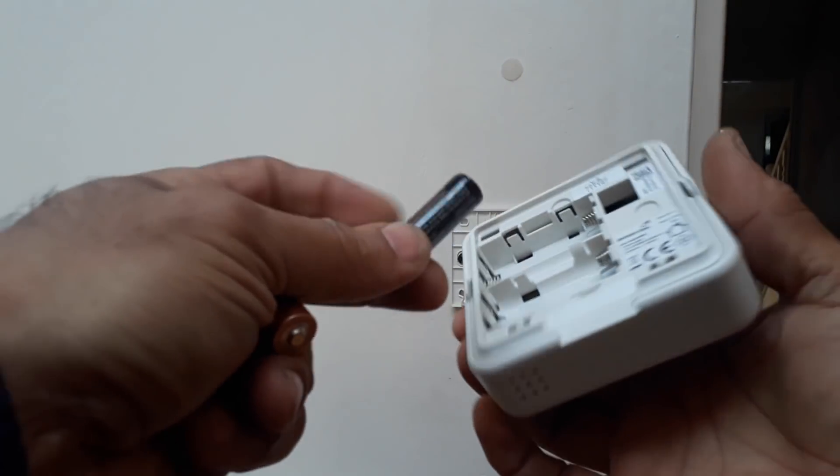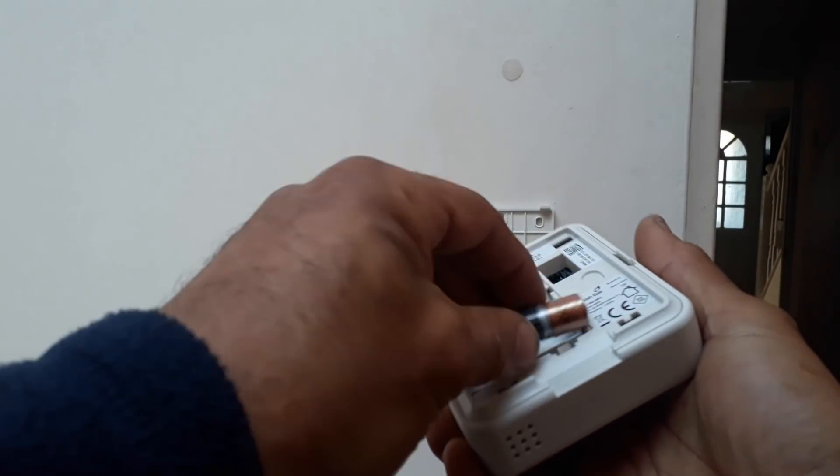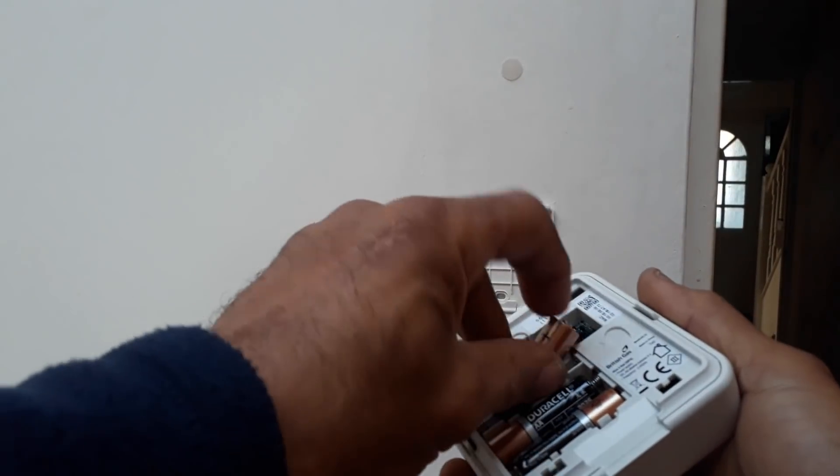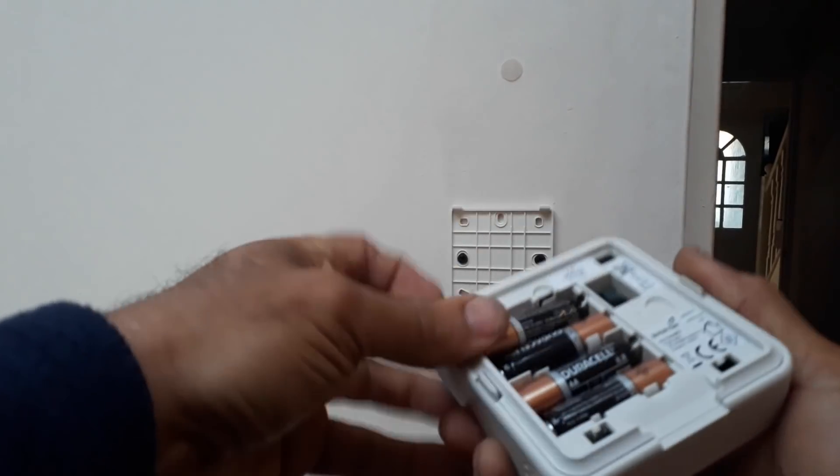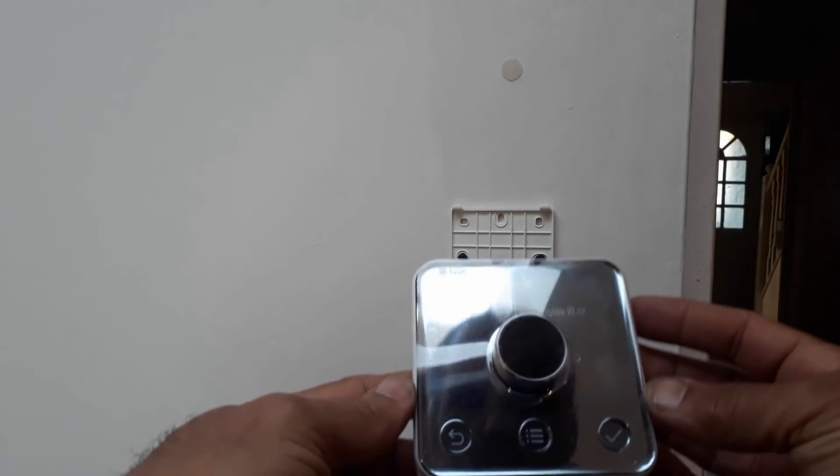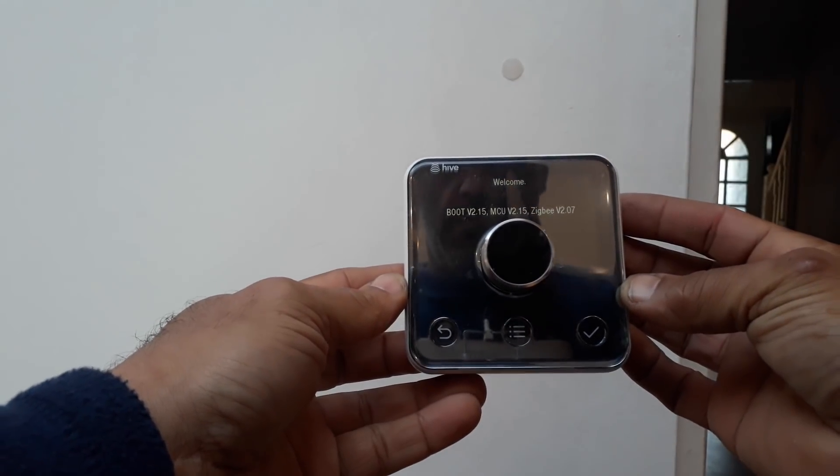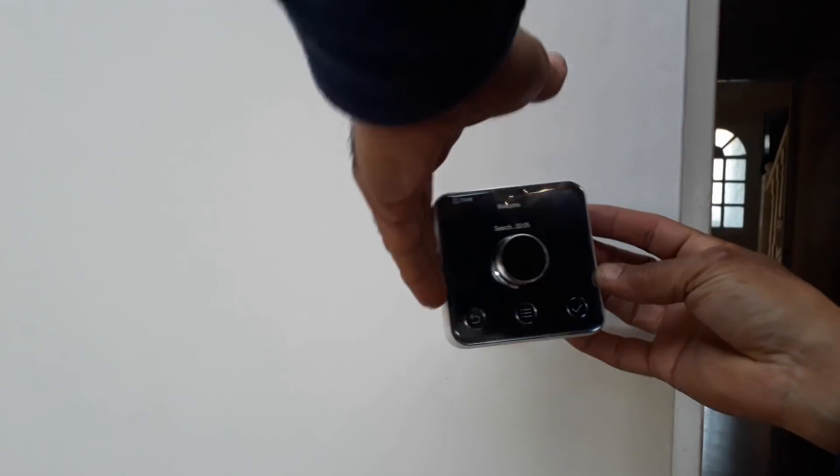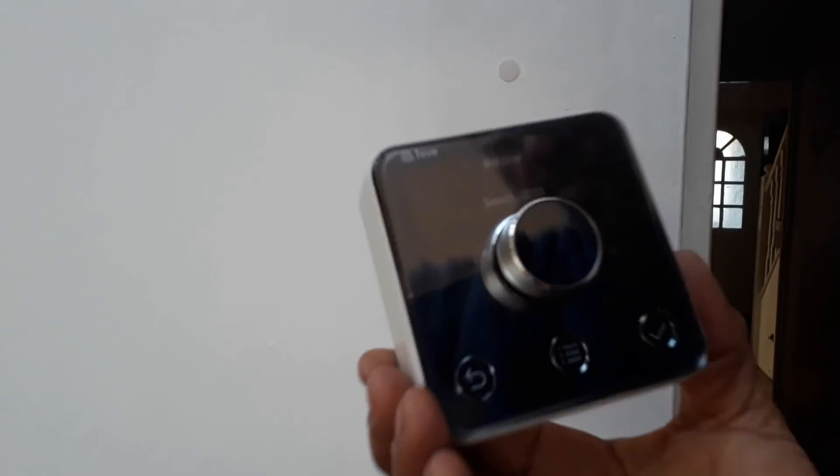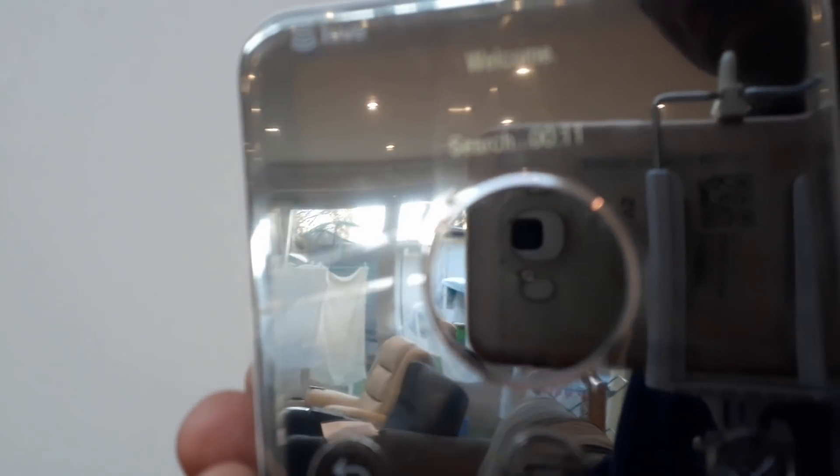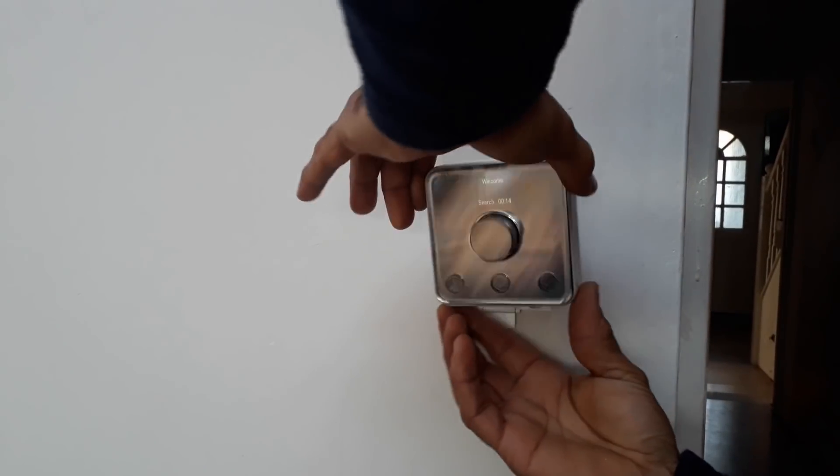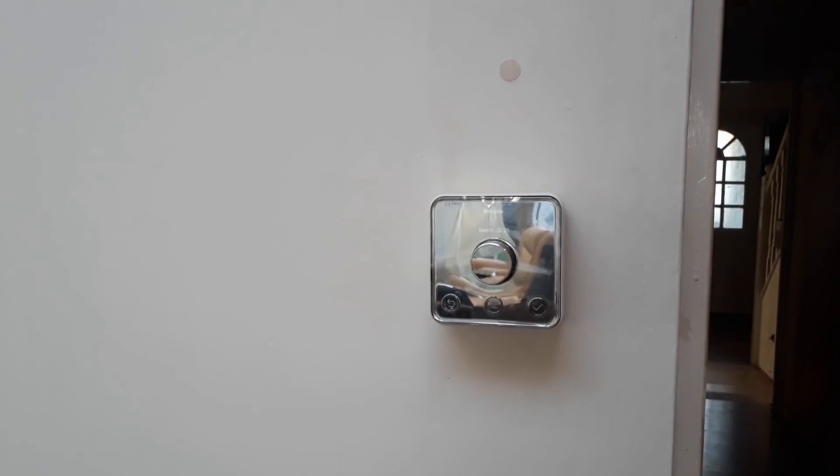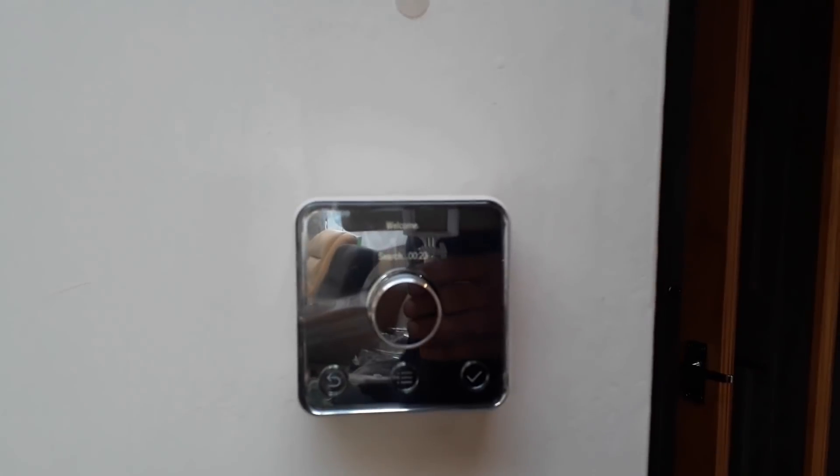Install the batteries into the new thermostat. Oh it's come on, searching one two three four. Searching for something, you see that. Put it on the wall, that's it, that's the thermostat installed.